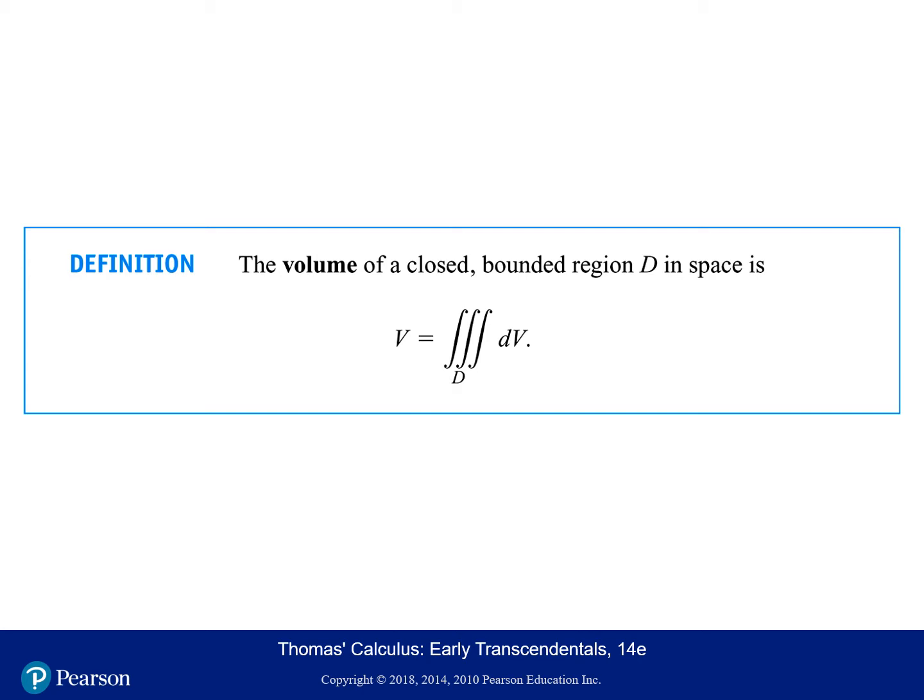By definition, the volume of a closed bounded region D in space is the triple integral over this region. Notice that there is no explicit function value — technically the function value is one, so we're integrating the function equal to one over a three-dimensional region. There's an invisible one right between the integral and dV.